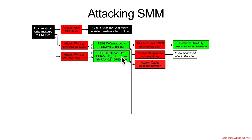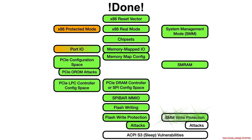So that was our next attack, which was applicable to both CSEG and TSEG — cache misconfiguration, specifically marking the SMRR range as write-back — and the defense for that is SMRRs. That was the last fundamental mechanism for write-protecting SMM, and you've seen a little bit of the attacks. But let's keep going and see some more attacks.